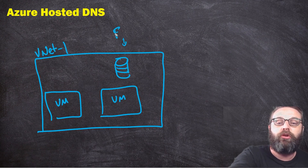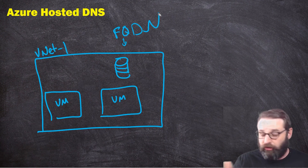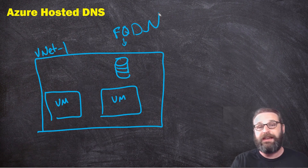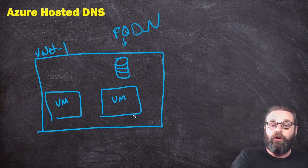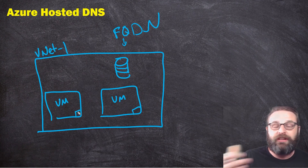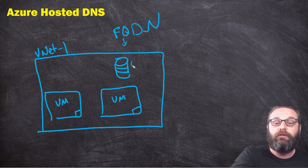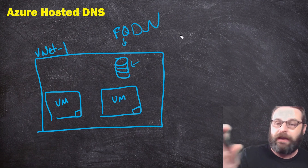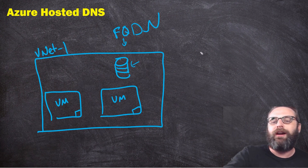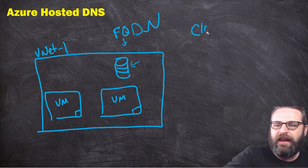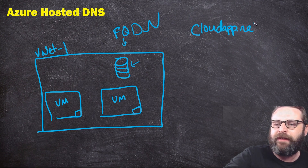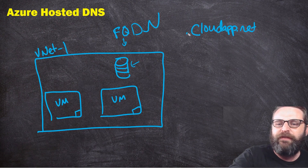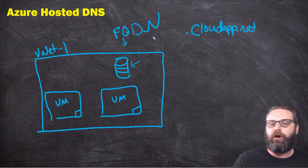All of these resources receive a fully qualified domain name - a resolvable, fully qualified domain name. My virtual machines that have their NICs attached, or my SQL server that has its NICs attached, each receives a fully qualified domain name. You should be aware that these domain names all end with cloudapp.net, and specifically there are a couple of things resolved in front of that.